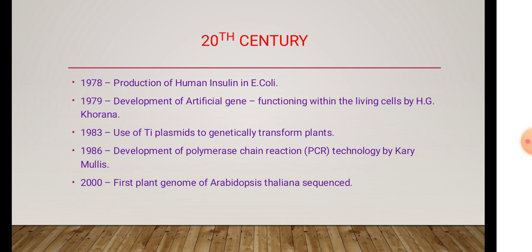In 1986, development of the Polymerase Chain Reaction — PCR, otherwise called a thermocycler. These thermocyclers were discovered by Kary Mullis. Nowadays, coronavirus detection is done by the PCR method. During 2000, the first plant genome of Arabidopsis thaliana was sequenced — the first isolated plant genome obtained from Arabidopsis thaliana.